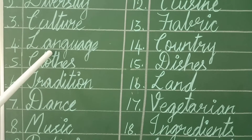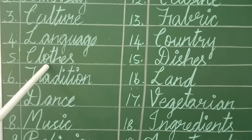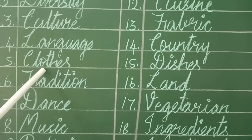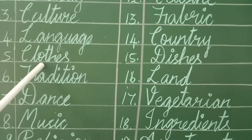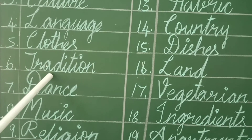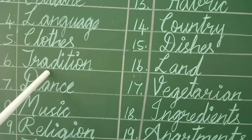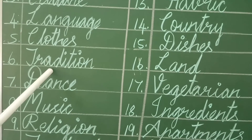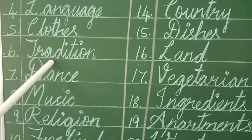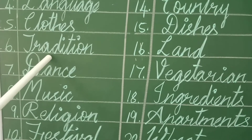Clothes — it means items worn to cover the body. Tradition — it means the transmission of customs or beliefs from generation to generation.